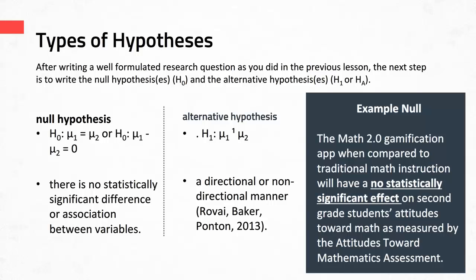Let's start with the null hypothesis. The null hypothesis simply states that there is no significant or statistically significant difference or association between the variables. It's usually stated in terms such as: there's no statistically significant effect, there's no statistically significant difference, or there's no statistically significant relationship. It can also be written using symbols, as you can see here on this slide, but for most educational and social science types of research, the null hypothesis is usually written in words.